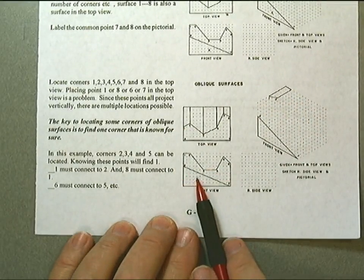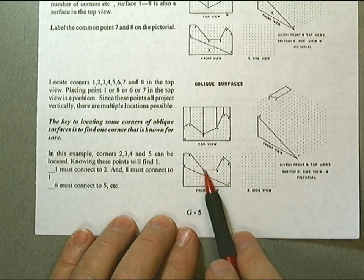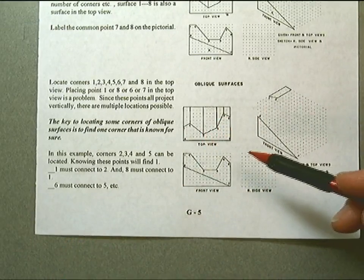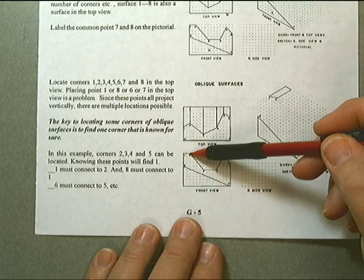In this example, corners 2, 3, 4, and 5 can be located. They can be nowhere else. Knowing these points, we'll find 1 since we know where 2 is.